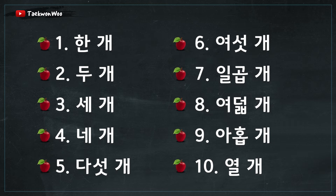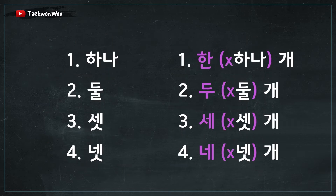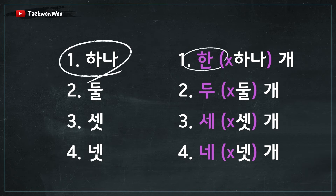Alright, that's how to count inanimate objects in general. Now I want you to notice a couple of things here. First of all, let's take a look at the numbers 1 through 4. Did you notice that those numbers are different than in the native Korean number system? The number 1, which is 하나, has been changed to 한 — 한, 한 개 with the counter.